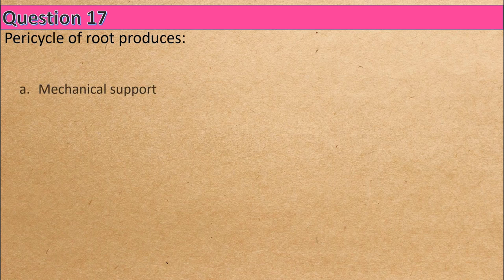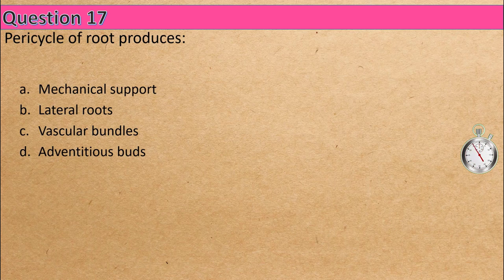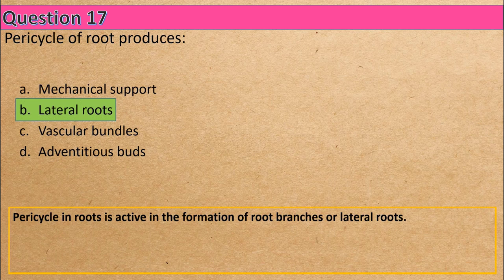Question 17: Pericycle of root gives rise to — Option A: mechanical support, Option B: lateral roots, Option C: vascular bundles, Option D: adventitious buds. The correct answer is Option B: lateral roots.